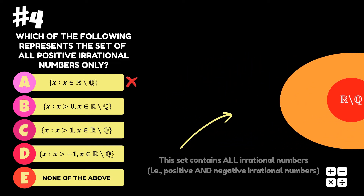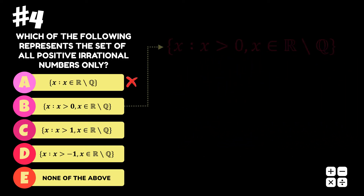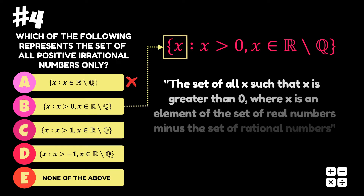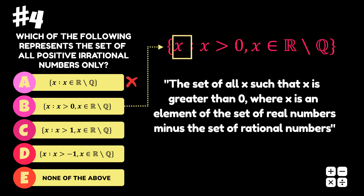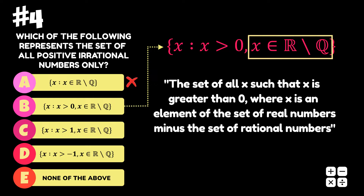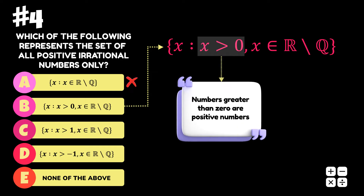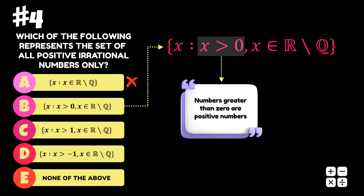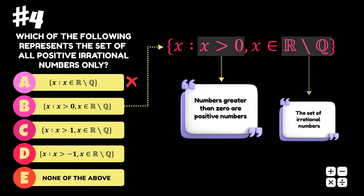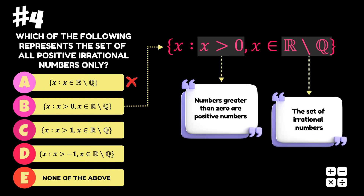Looking at Option B, we can describe this set as the set of all x such that x is greater than 0, where x is an element of the set of real numbers minus the set of rational numbers. Numbers that are greater than 0 are positive numbers, and once again, the set of real numbers minus the set of rational numbers is the set of irrational numbers.